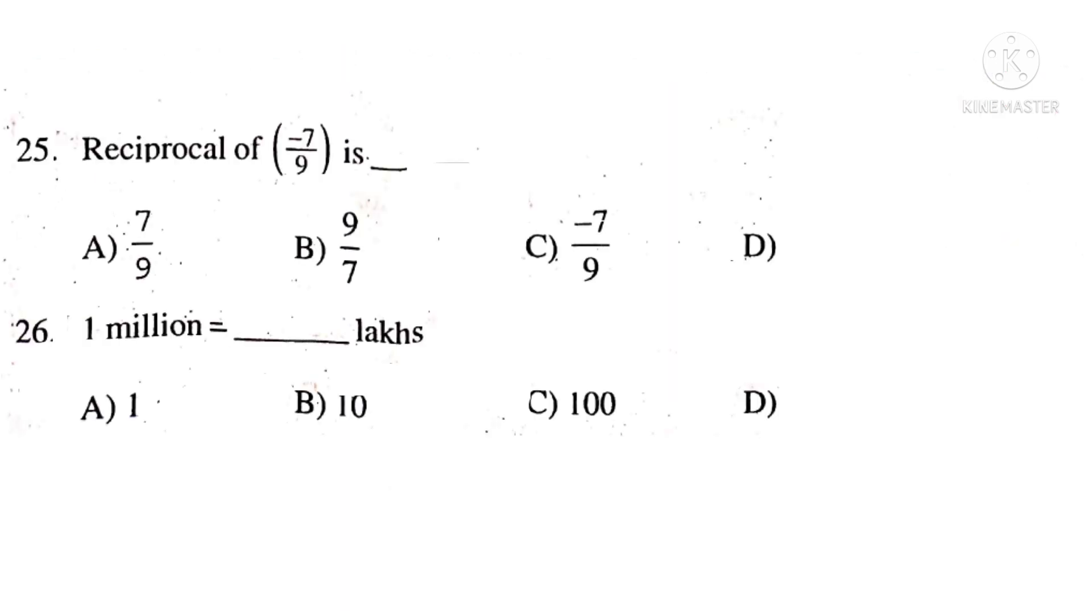Now 25th question. Reciprocal of minus 7 by 9 is just interchange the numerator and denominator without changing the sign. That is minus 9 by 7. So the correct choice is D.